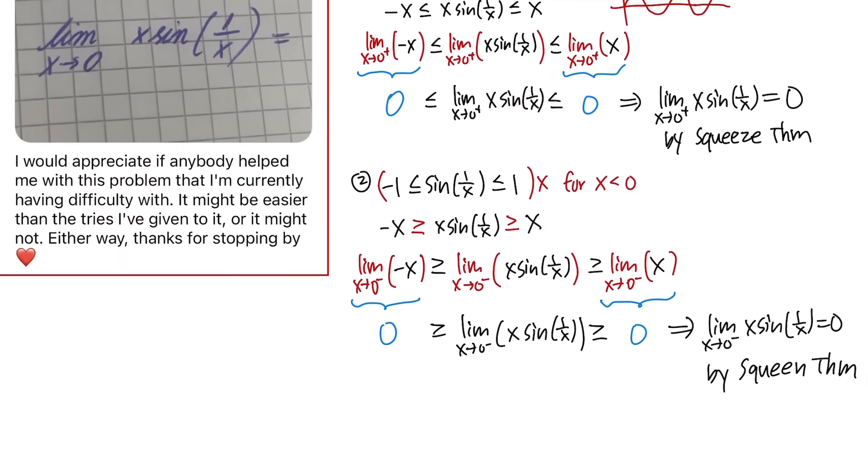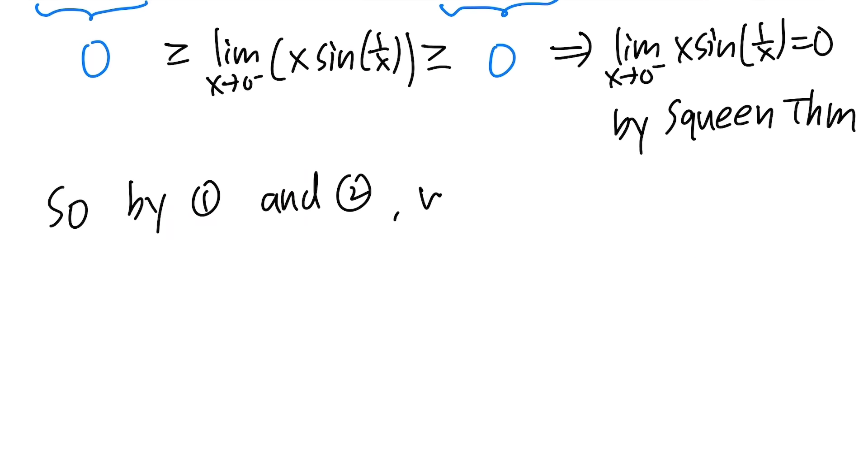So, finally, we can say by 1 and 2, we conclude that the limit as x approaching 0 of x times sine of 1 over x, this is indeed equal to 0.